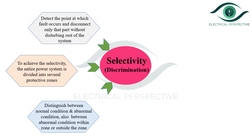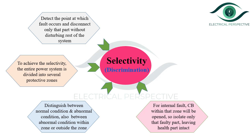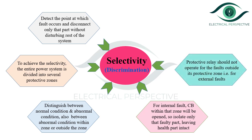This property is also known as discrimination. For an internal fault, the circuit breaker within that zone will open, isolating only the faulty part and leaving the healthy part intact. The protective relay should not operate for faults outside its protective zone, i.e., external faults. An internal fault is one occurring within the protective zone; an external fault is one outside it. The relay should operate for internal faults only to achieve selectivity.